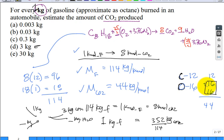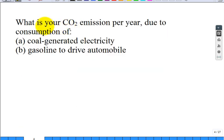Anyway, but let's press on now. Remember that number, though. What is your CO2 emission per year due to consumption of coal-generated electricity or gasoline as you drive an automobile? So this is what we're going to attack. This is what we're going to talk about.